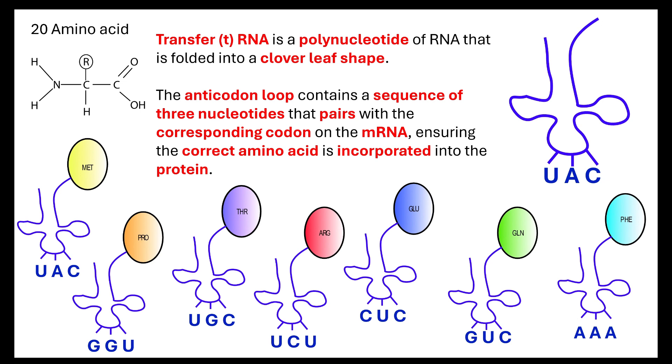Therefore, that tells us that with 20 amino acids, many of the triplet codes, the anticodons, will actually code for the same amino acid.